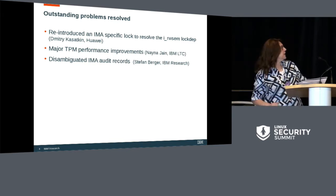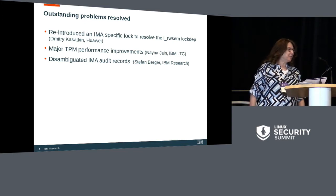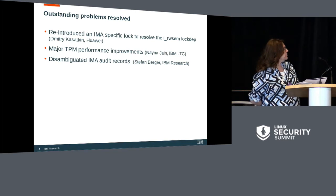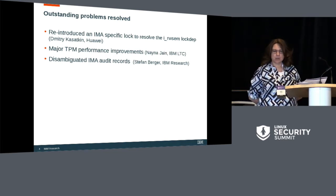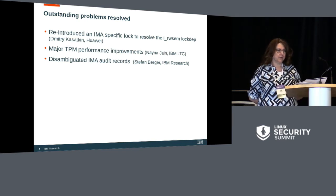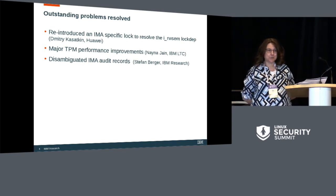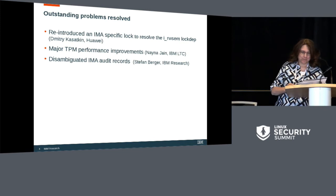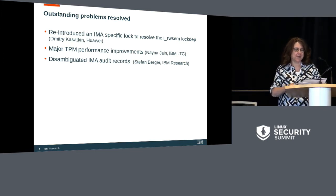My colleague Stefan, with the audit people here and Paul's help and others', has disambiguated some of the audit records. As soon as the auditing IDs are up there, we'll start to be able to do the namespacing. The IMA namespacing — the first one — will be based on audit, and that will probably be the first IMA namespacing.